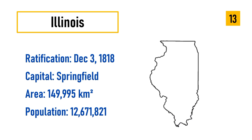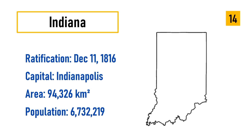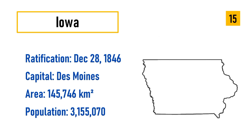Number 13: Illinois, ratification December 3, 1818, capital Springfield, area 149,995 square kilometers, population 12,671,821. Number 14: Indiana, ratification December 11, 1816, capital Indianapolis, area 94,326 square kilometers, population 6,732,219.